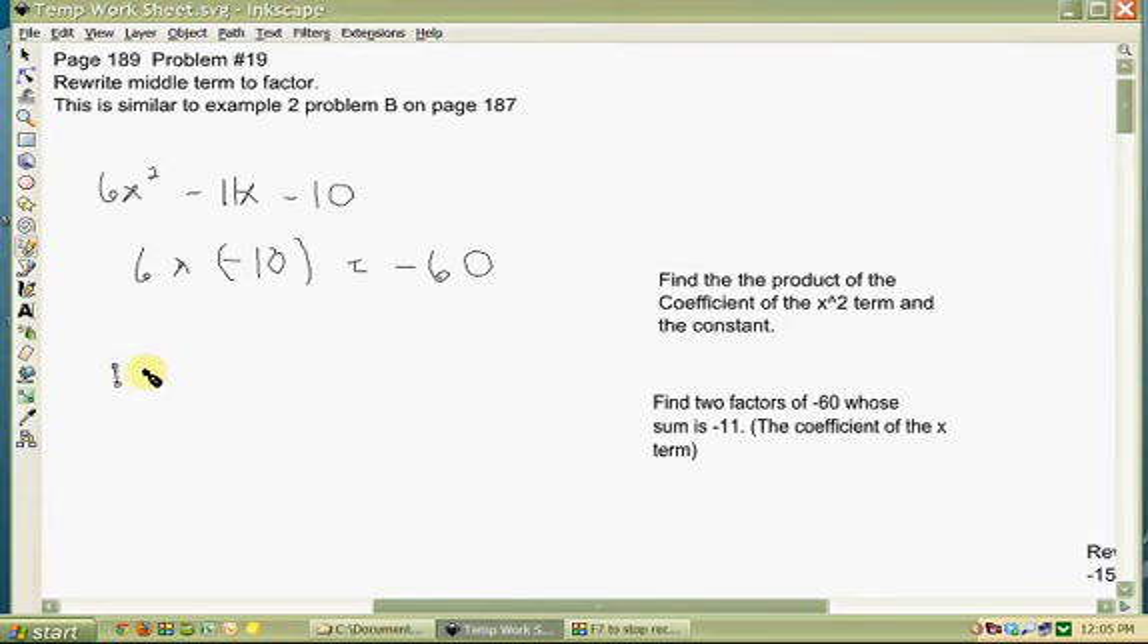We could have 1 and 60, or 2 and 30. Can we get -11 by combining 1 and 60? No, you can get 61 or 59. With 2 and 30, you can get 28 or 32 or -28. Let's look at 3 and 20. Nah, but watch this.